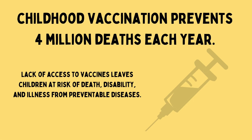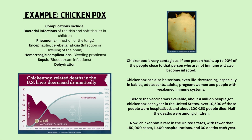Childhood vaccination prevents 4 million deaths each year, and a lack of access to vaccines can leave children at risk of death, disability, and illness from preventable diseases. Example one is chickenpox. Complications include bacterial infections of the skin and soft tissues in children, pneumonia, encephalitis or cerebellar ataxia, hemorrhagic complications, sepsis, and dehydration. Chickenpox-related deaths in the U.S. have decreased dramatically since the vaccine.